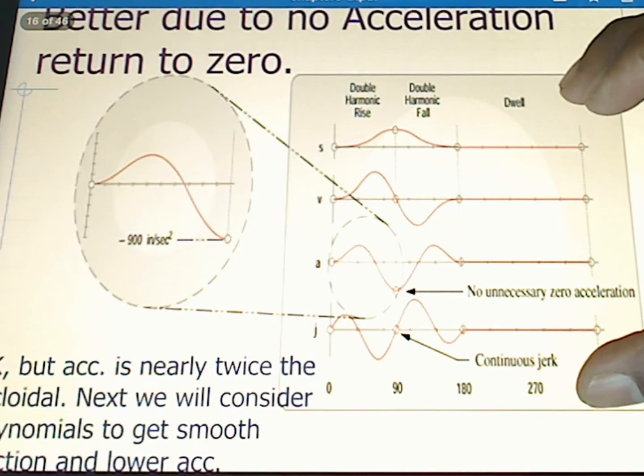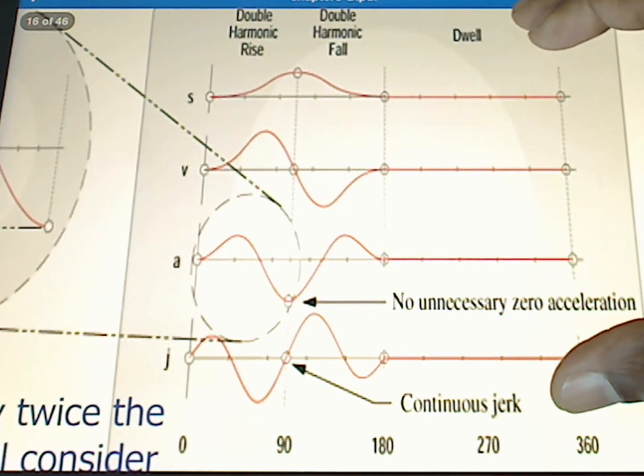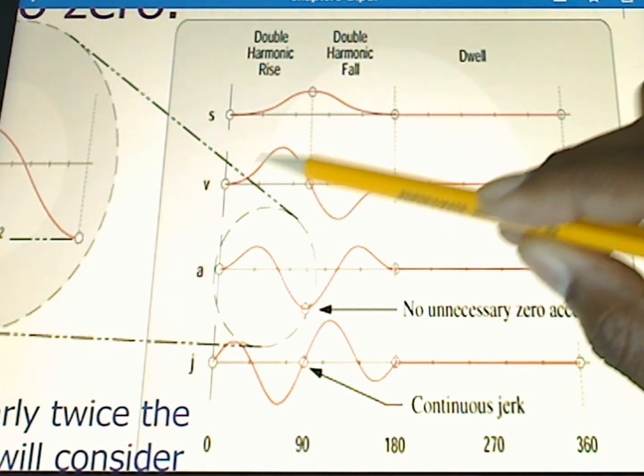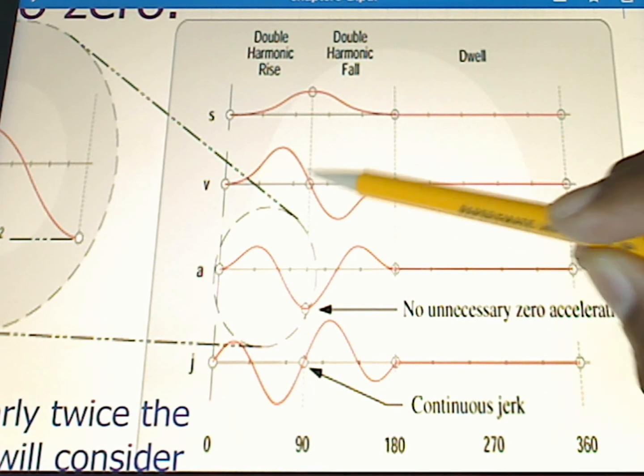So rise equations, fall equations, and this is our result. This result is somewhat better due to no acceleration returning to zero. And so here if we look at these curves we'll see our position rises, immediate fall, then going to dwell.